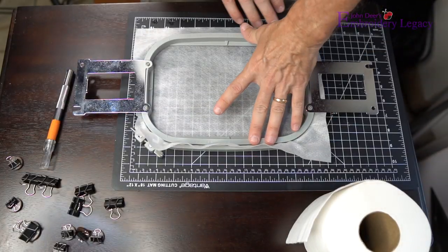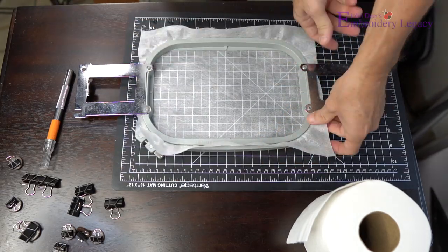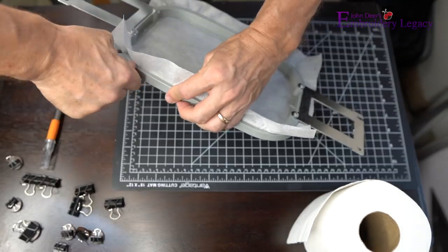For step one we are going to hoop our no-show mesh stabilizer. Make sure you pull it tightly and then tighten the hoop as tight as it will go.